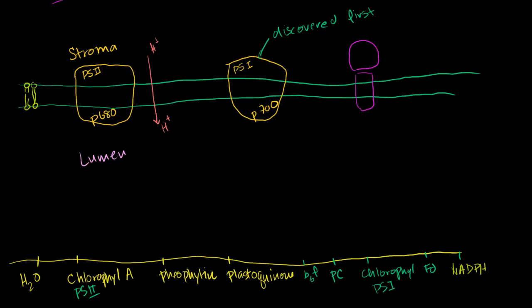If we go up, that's a high energy state; down is a low energy state. Electrons are already very comfortable in water. And in chlorophyll A, they're even more comfortable — at least this is how I view it. Left to its own devices, this electron will never leave chlorophyll A. But we know what happens — a photon comes in from 93 million miles away.